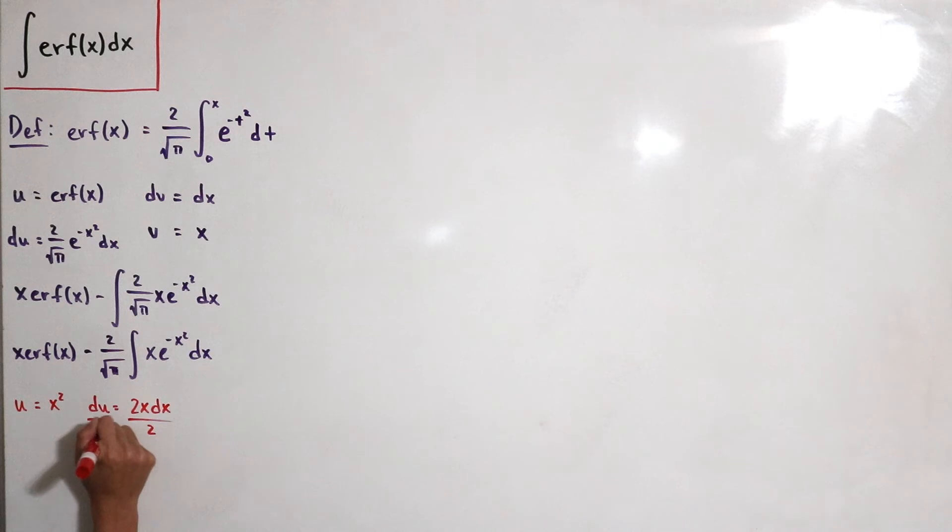And then du is equal to 2x dx. Okay, I'll just divide 2 to both sides so we have that this is one half du is equal to x dx. Okay, and then we just plug the substitution.